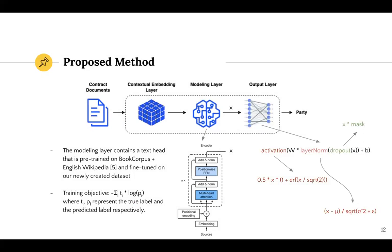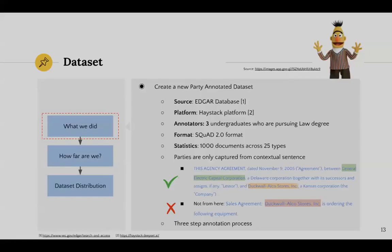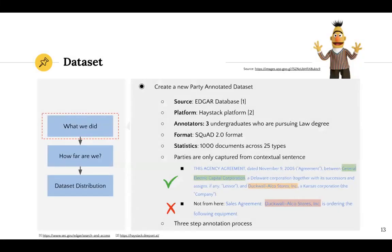The proposed solution for identifying parties mentioned in contract documents is presented as a question-answering task. Our proposed solution consists of two parts. The first one is annotating a new dataset with exact match annotations, and then in the modeling part, we made architectural modifications to the transformer-based Roberta model to develop a question-answering model that can identify parties involved in legal contracts. The available dataset for party extraction is the Contract Understanding Atticus dataset, CUAD, which consists of 510 agreements of 25 different types obtained from the Electronic Data Gathering, Analysis, and Retrieval, EDGAR, system.